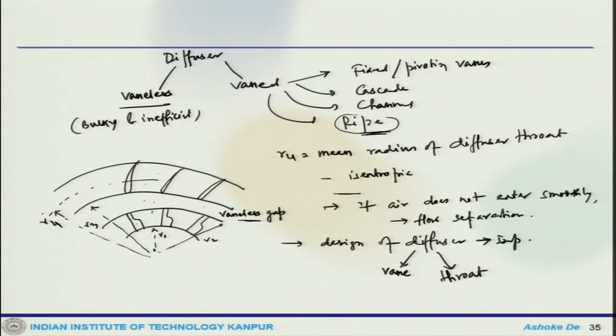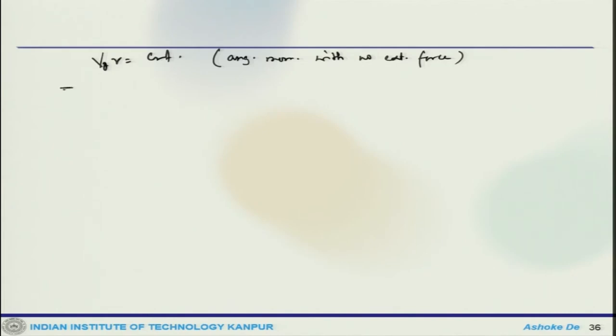Since no further energy is supplied to the air once it leaves the impeller, the angular momentum must be conserved in this vaneless passage, and you can neglect frictional losses. This is an external loss and the process is isentropic. Theoretically, v_theta × r = constant, which is the angular momentum with no external force. This gives an idea of how v_theta varies as 1/r — the tangential velocity decreases as r increases, from impeller tip to diffuser vane.